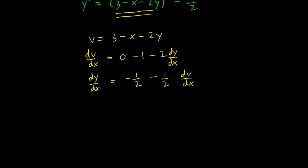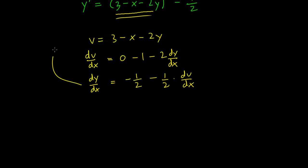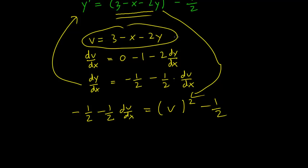Now we make that substitution back in there and we have minus 1/2 minus 1/2 dv/dx, and that's y prime, is equal to v² minus 1/2. You should recall we replaced the 3-x-2y term with the v term that way, and that's how we get this equation.